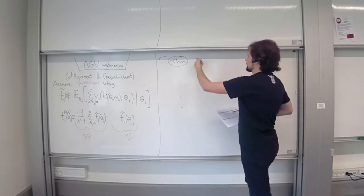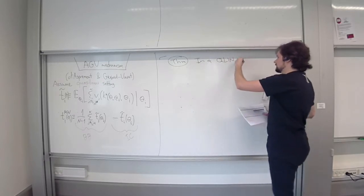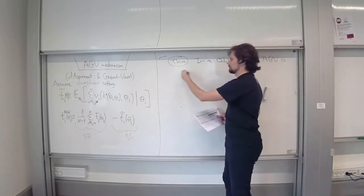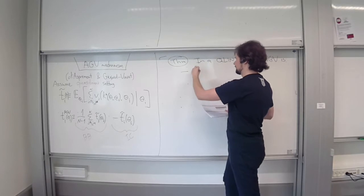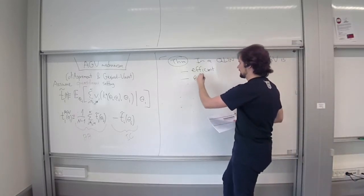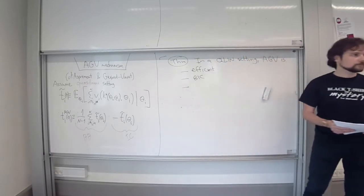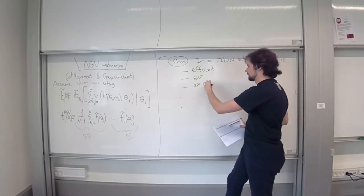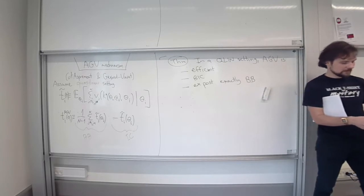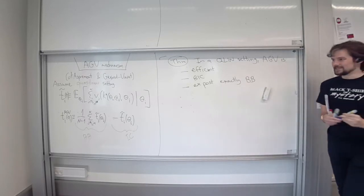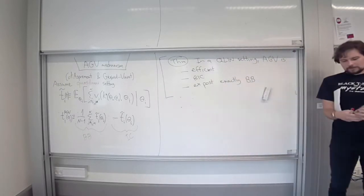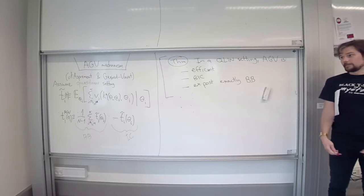And the actual statement of AGV properties. So this is called the AGV mechanism, or the expected externality mechanism. And the properties of it are as follows. In a quasi-linear setting, AGV mechanism is efficient, just as usual, by construction, because we are taking the efficient allocation rule. It will be Bayesian incentive compatible, and it will be ex-post exactly budget balanced. So it will run at exactly zero revenue in all realizations of the world, for any realizations of the type profiles. Now, we know that it's efficient, but we need to prove the two other things. So, let's try to do that really quickly.